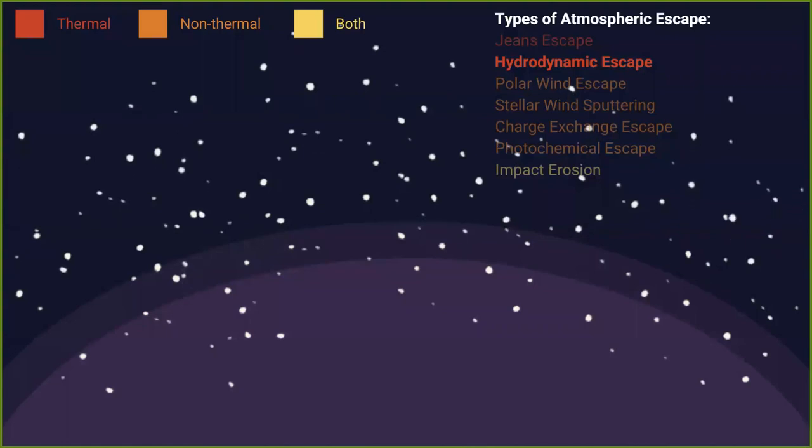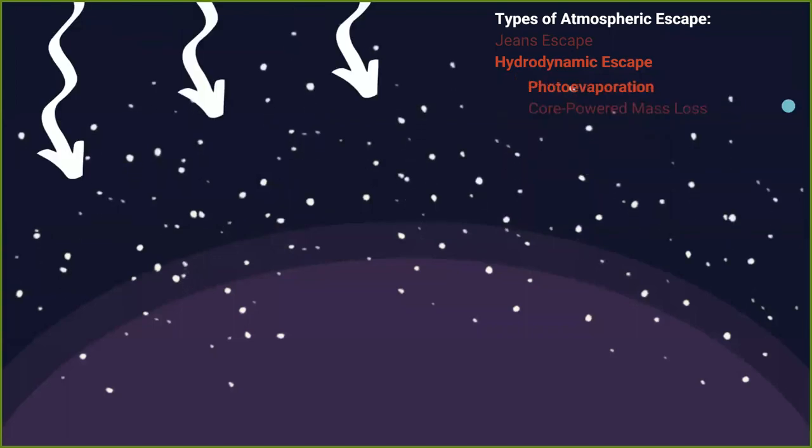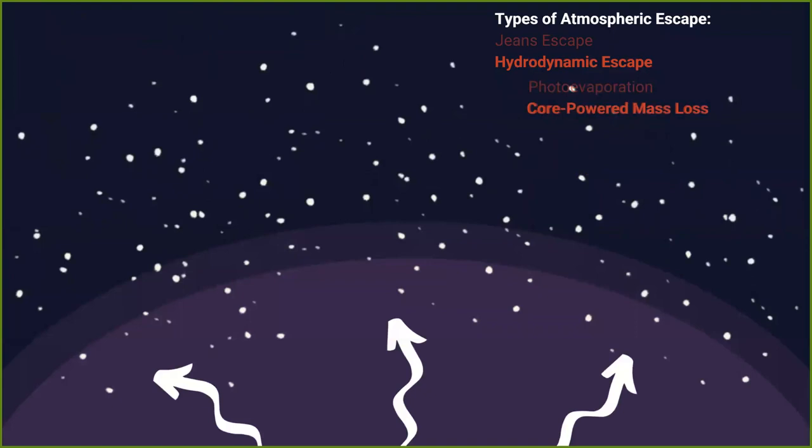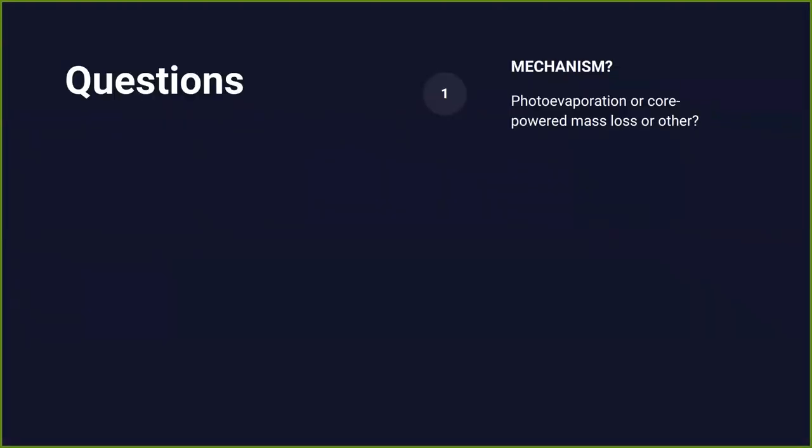But the atmospheric escape process thought to be the most influential on exoplanets is hydrodynamic escape. It's a thermal version of atmospheric escape. And it occurs when the upper atmosphere globally is heated, and that causes a bulk outflow off of the planet. And this makes the mass loss rate, so the amount of mass that's lost over a small bit of time, very, very high. Digging even deeper, hydrodynamic escape can be caused by photoevaporation. So this is an external atmospheric escape driver. This is when the irradiation from the planet heats the upper atmosphere.